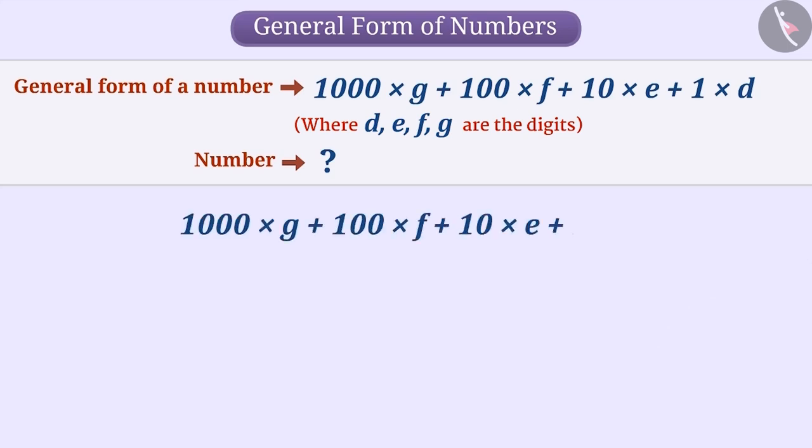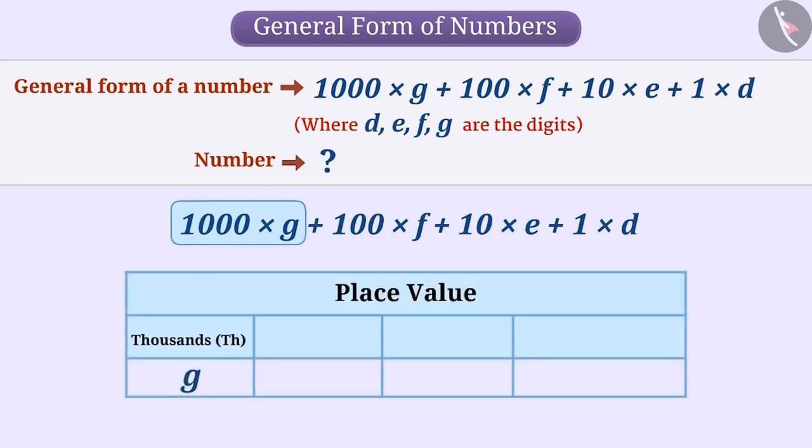We see that here the digit G is multiplied by 1000. So G must be in the place of 1000. Similarly, F is multiplied by 100. So F will definitely be a digit in the place of 100. Similarly, 10 × E tells us that E is at the tens place and 1 × D tells us that D is in the ones place. This way, the number will be GFED.